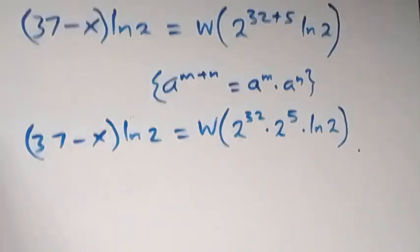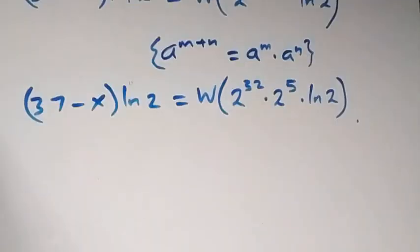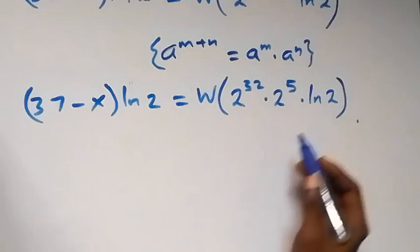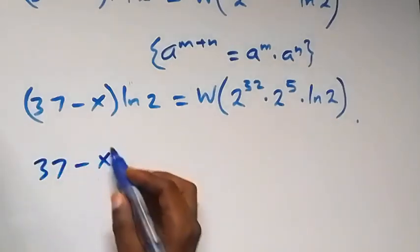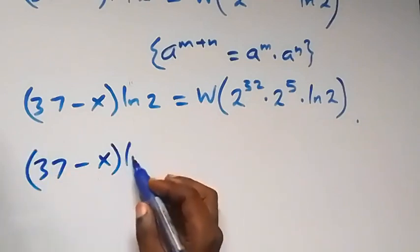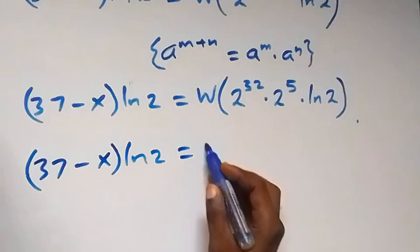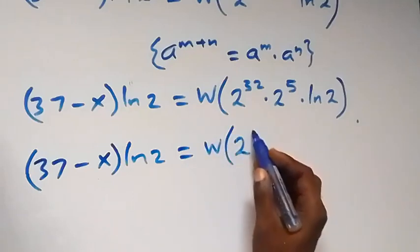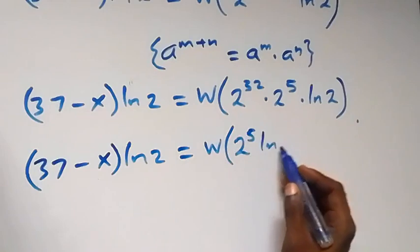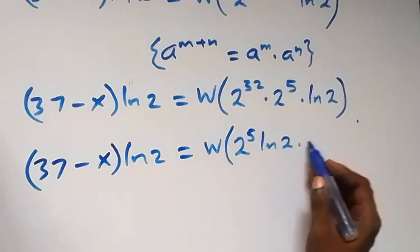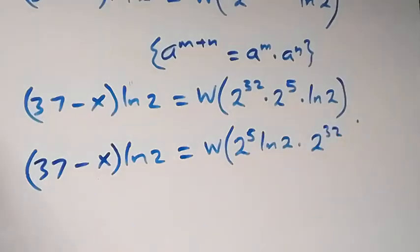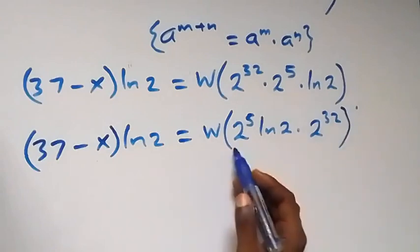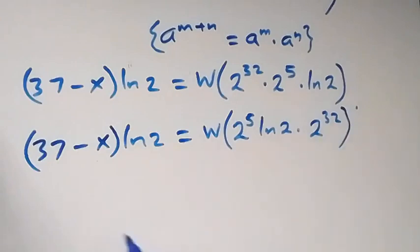From what we have here, we can group 2 raised to power 5 times ln 2 together. So 37 minus x times ln 2 now equals W of 2 raised to power 5 times ln 2, then times 2 raised to power 32. Since 2 raised to power 5 equals 32, we can write 2 raised to power 5 as 32.